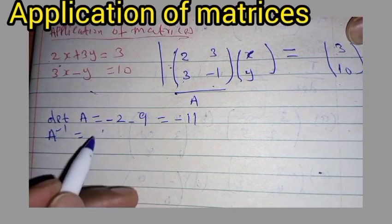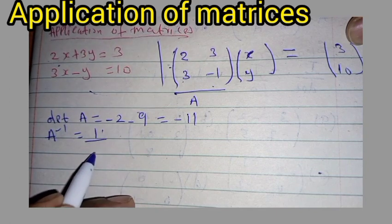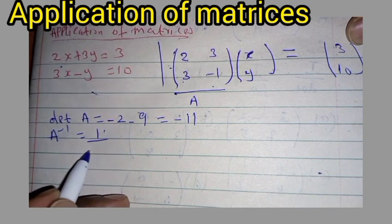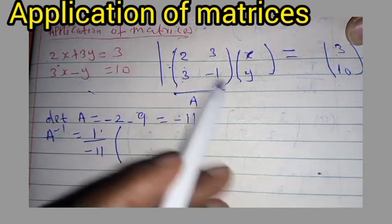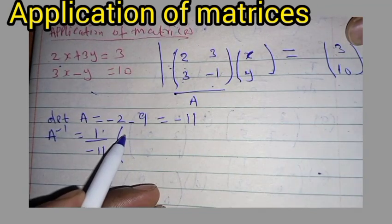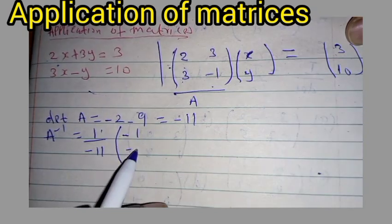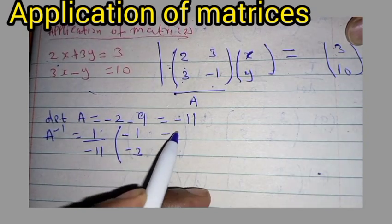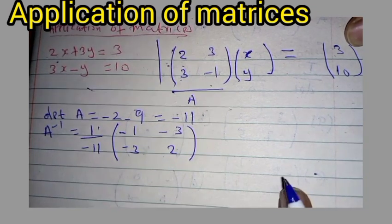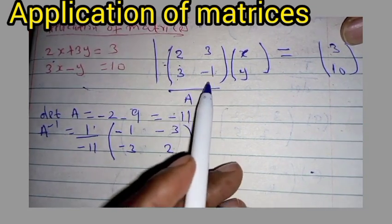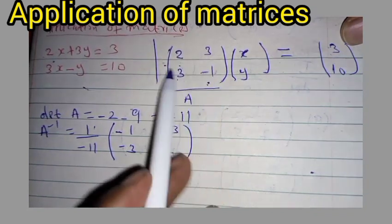From there you get A inverse. A inverse is given by one over the determinant, which is negative 11, multiplied by the bracket. You change this element: where you have negative 1 you write negative 1, where you have 2 you write 2, giving the matrix [-1, -3; -3, 2].